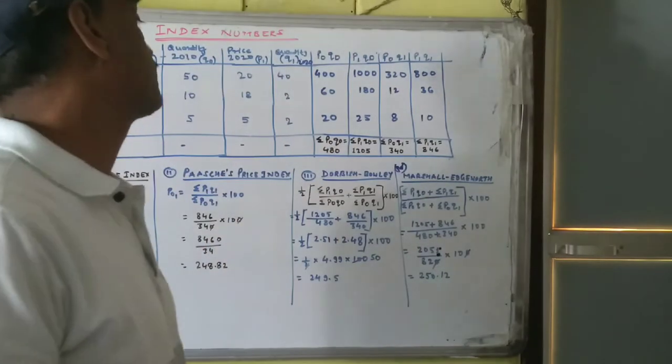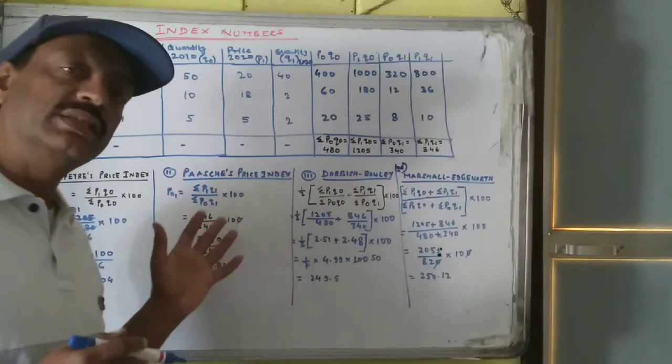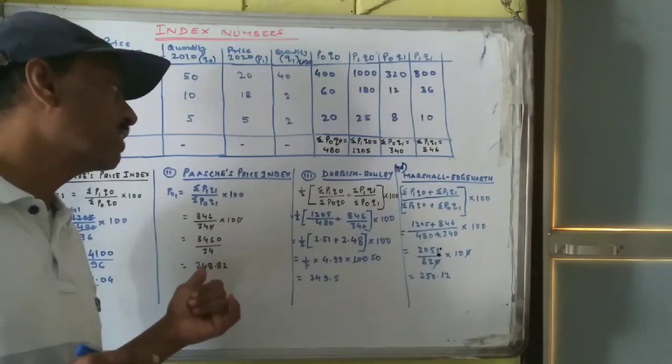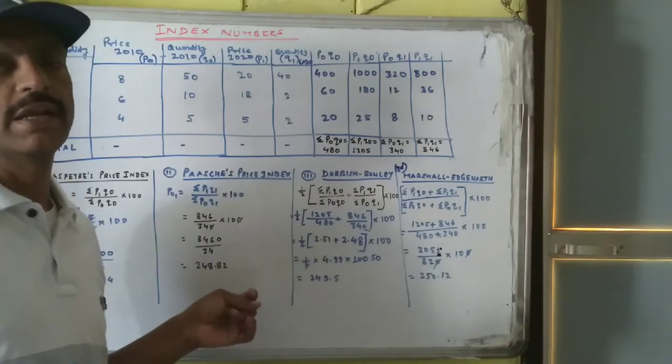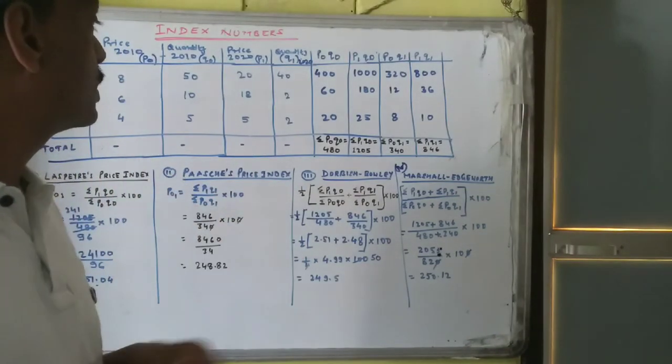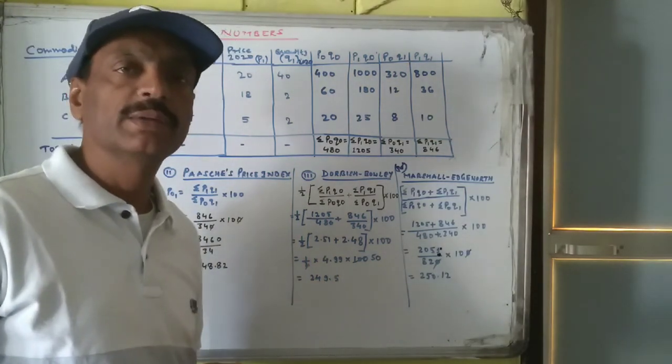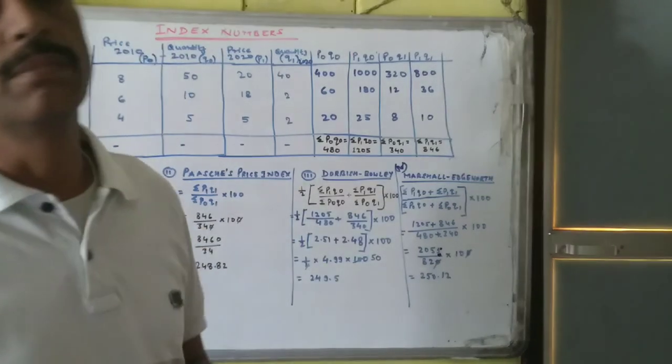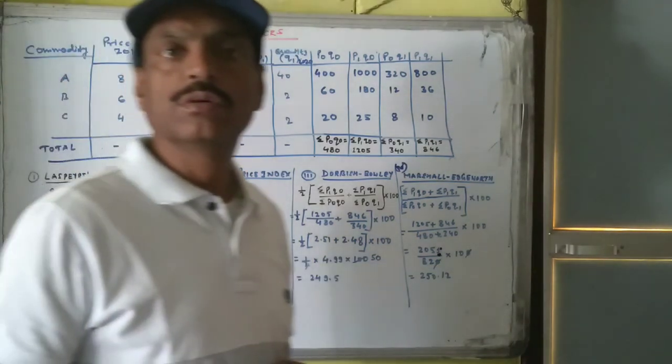So in the questions of index number, we have taken the four methods of index number. And by these four methods, you have to be careful if you want to do the correct calculation. If your calculation is correct, your solution will be also correct. We will have to do one more question of this index number, which is called the price index number by the method of Fisher. So in the next video, we will do the questions of index number by the Fisher method. Thank you, see you.